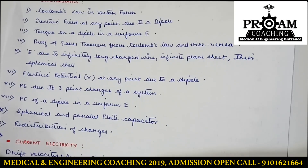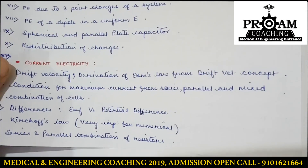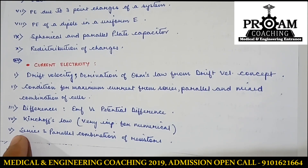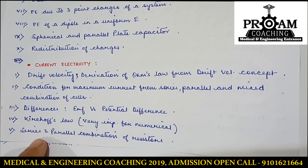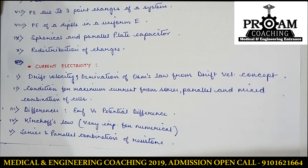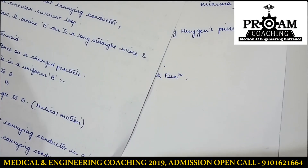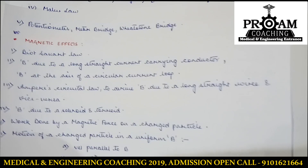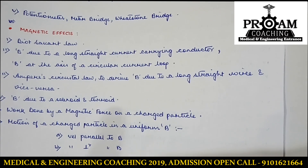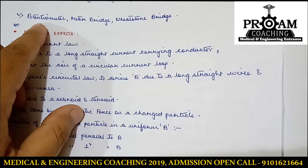For current electricity, there are five important topics. I initially didn't mention series and parallel combination of resistors, thinking everyone would do it, but I've added it now. Another important topic is the potentiometer, meter bridge, and Wheatstone bridge. Remember: you should not neglect the numericals from these portions — every year numericals have been asked from the potentiometer.